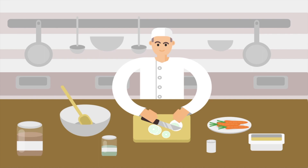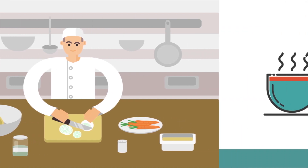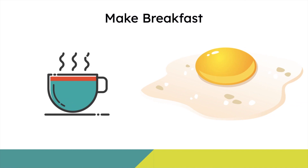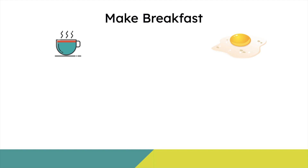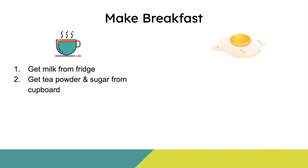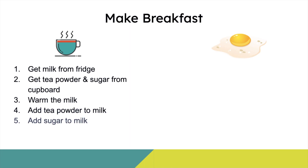Let me explain the difference using an example of making breakfast. I want to make a breakfast that includes tea and omelet. I will first make tea and then omelet — everything in sequential order. So I'll get the milk from the fridge, get the tea powder and sugar from the cupboard. I'll then warm the milk and add tea powder to milk, then add sugar and pour it in the cup. So my tea is ready.